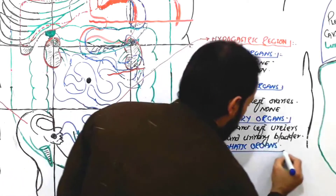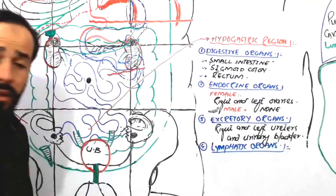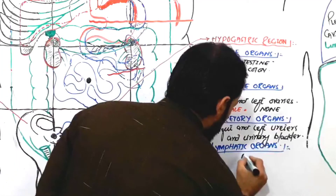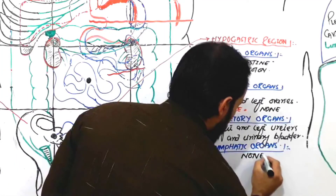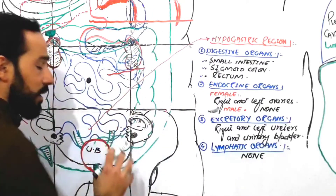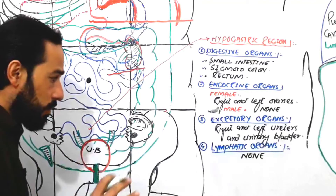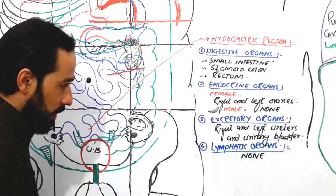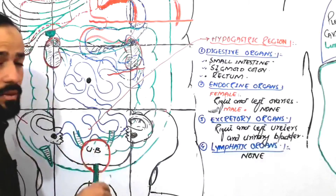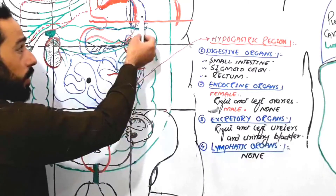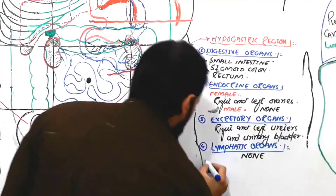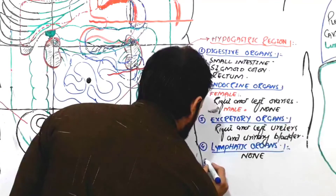The fourth group considered is lymphatic organs. None of the lymphatic organs are found in the hypogastric region. I have clarified the differences between lymphatic organs, lymphatic tissue, and lymphatic nodes in a separate lecture. No lymphatic organ such as the spleen is present here.